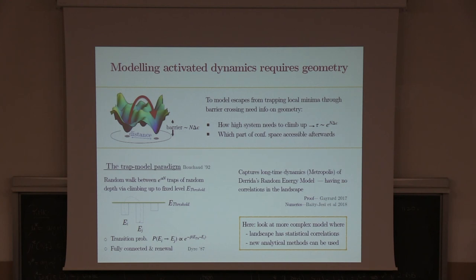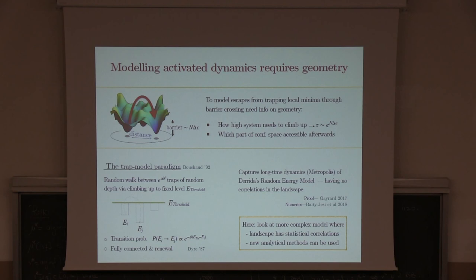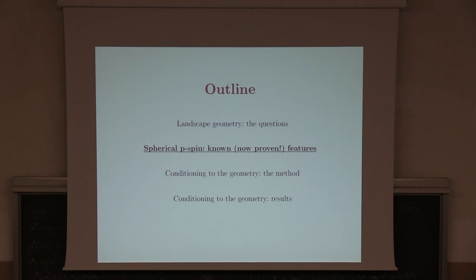This raises a natural question: how general is this? Can we generalize to models which are slightly more complicated, in the sense that the network of minima or traps in configuration space is more structured with correlations in the energy density, but still simple enough to compute these distributions explicitly? This very naturally leads to the model we look at — the spherical P-spin.